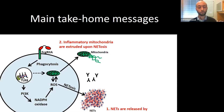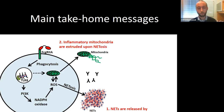Finally, I hope to convince you that measuring these components — including anti-mitochondrial antibodies and markers of circulating NETs — may be helpful in many pathologies to monitor patients, aid in diagnosis, and understand which patients are at risk of developing very severe disease.